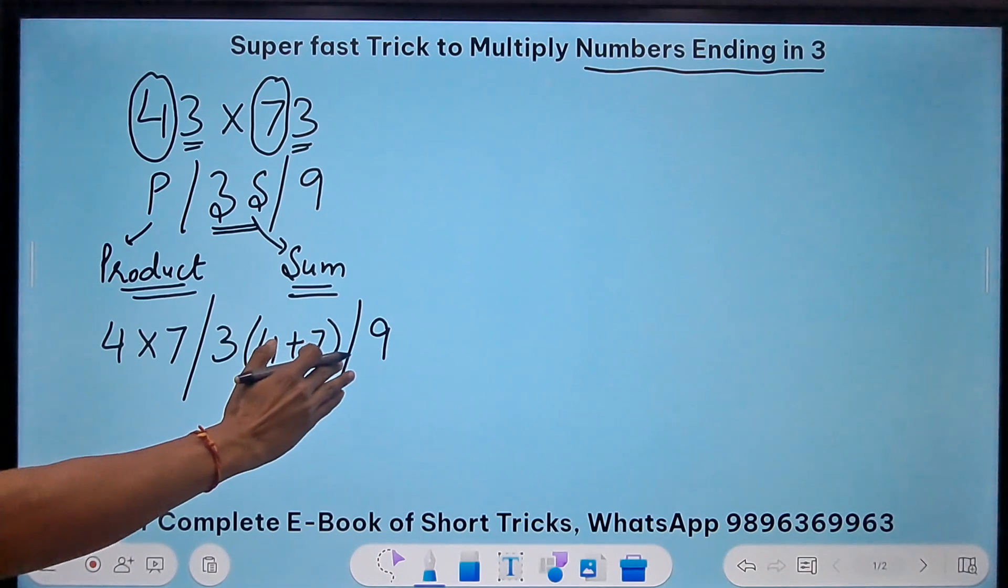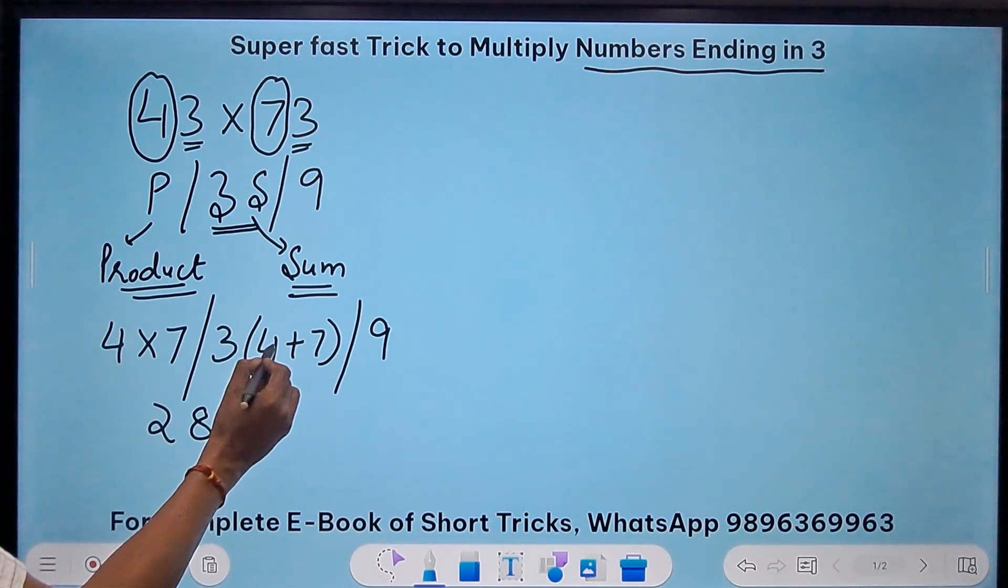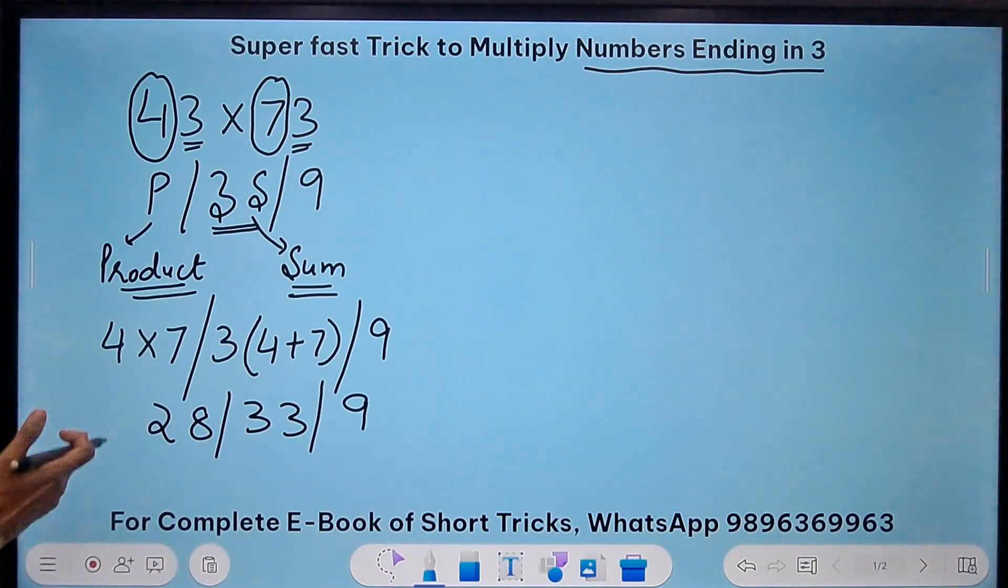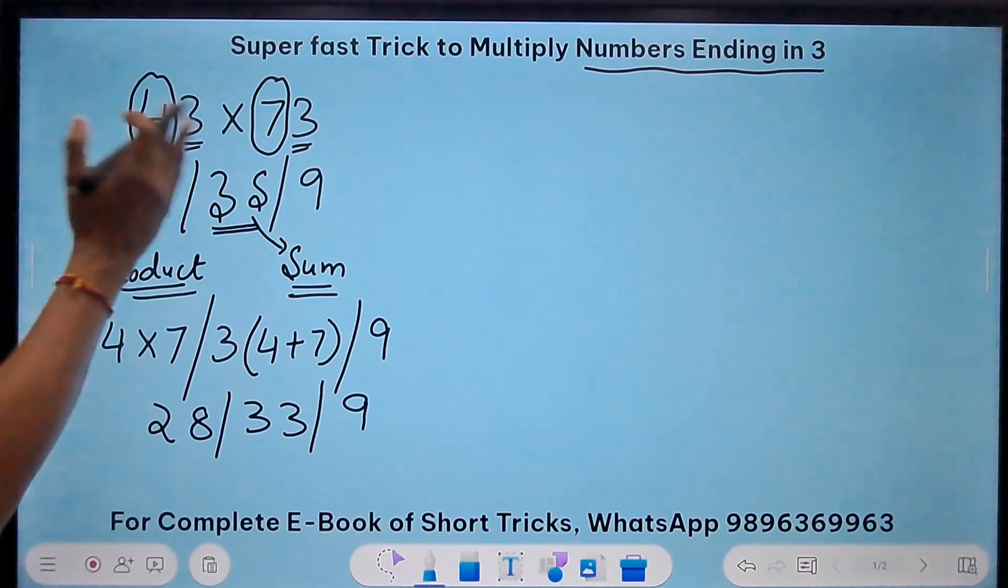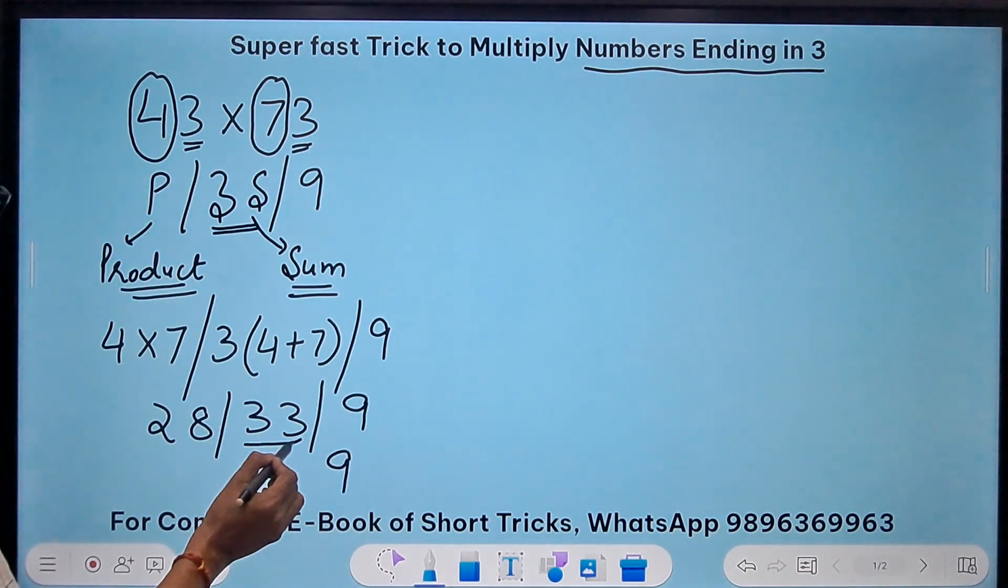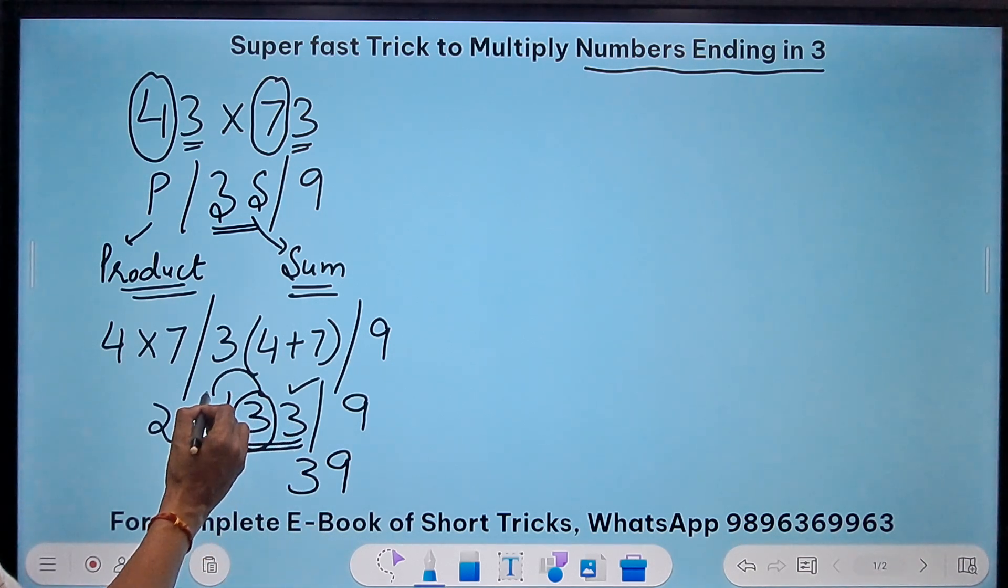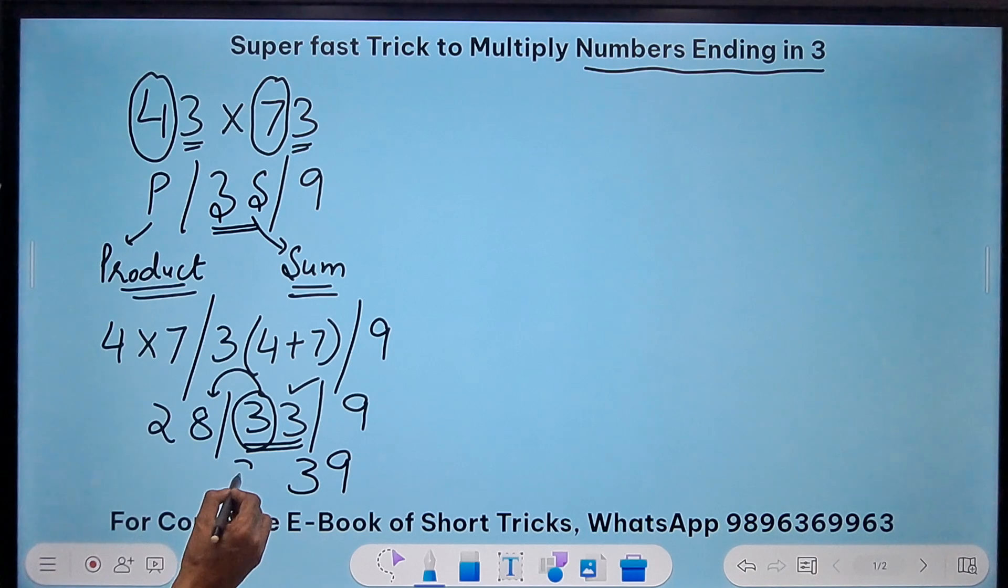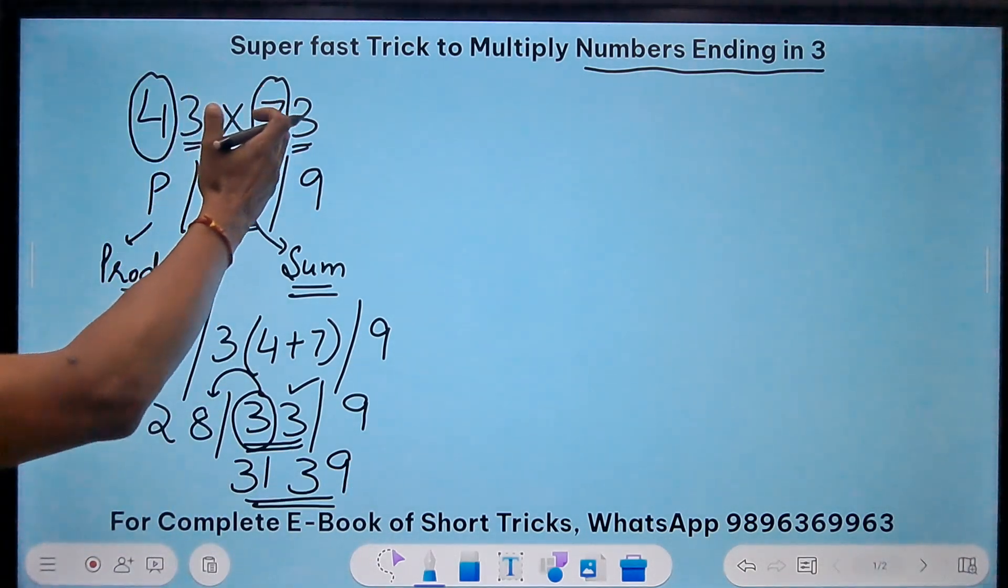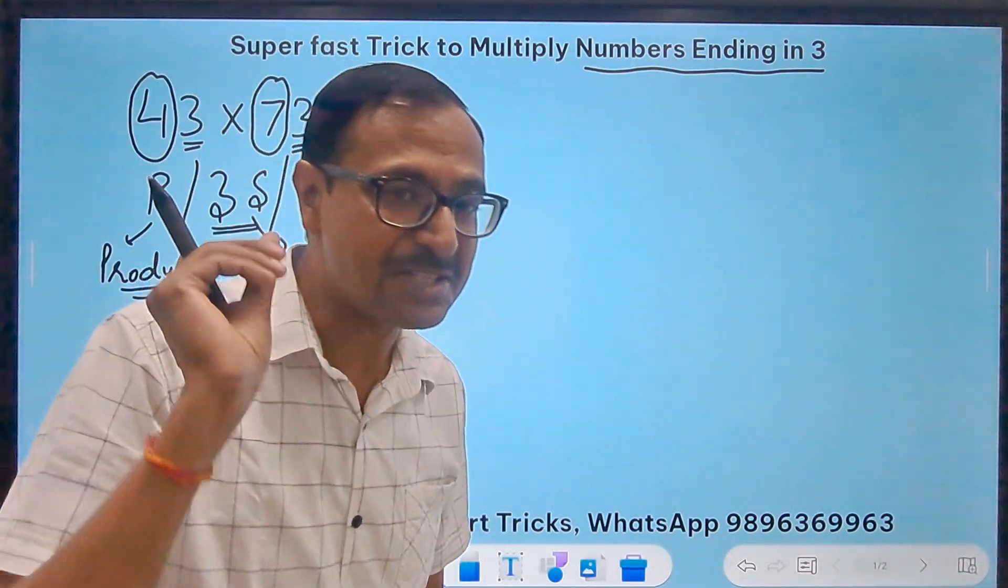We are talking about the product of 4 and 7, that means P stands for 4 times 7, 3 times the sum, sum means sum of the same numbers 4 plus 7, and finally we have the 9. This is 28 and this is 11, 3 times is 33, and then we have the 9. The 9 is a single digit number, 33 is a double digit number, so retain the 3 here and this number is to be carried forward. So 28 plus 3 is 31. Now pick up the calculators and check: 43 times 73 is 3139.